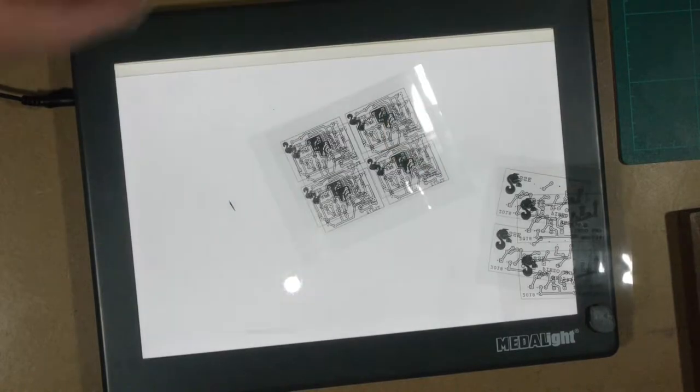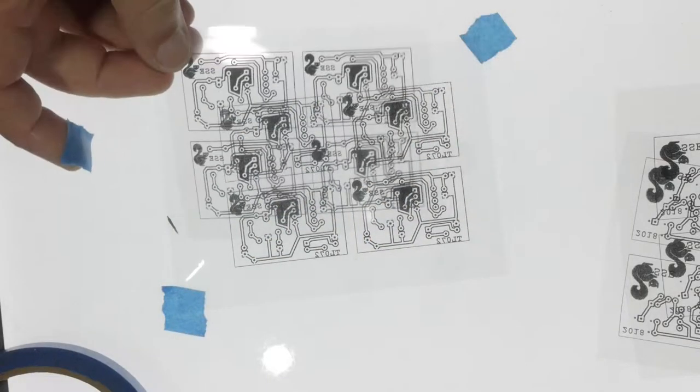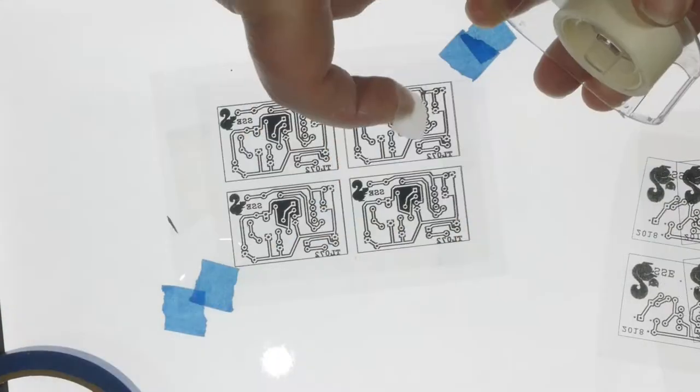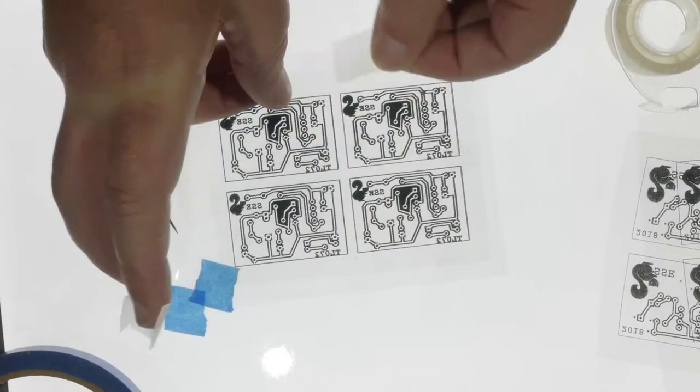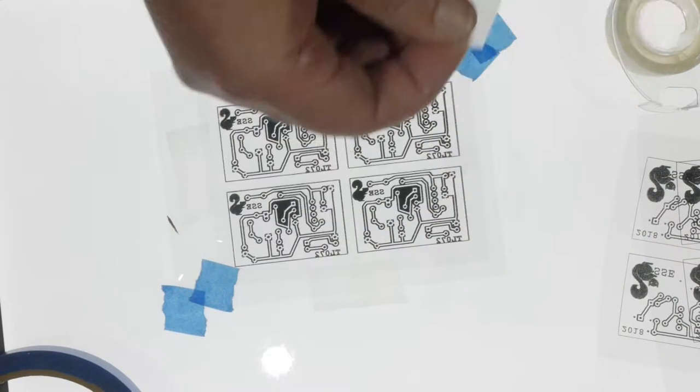I use laser transparency and stack up two layers to get the density I need. I basically just stack it up by eye and use magic tape to hold it down. I find that works well enough.